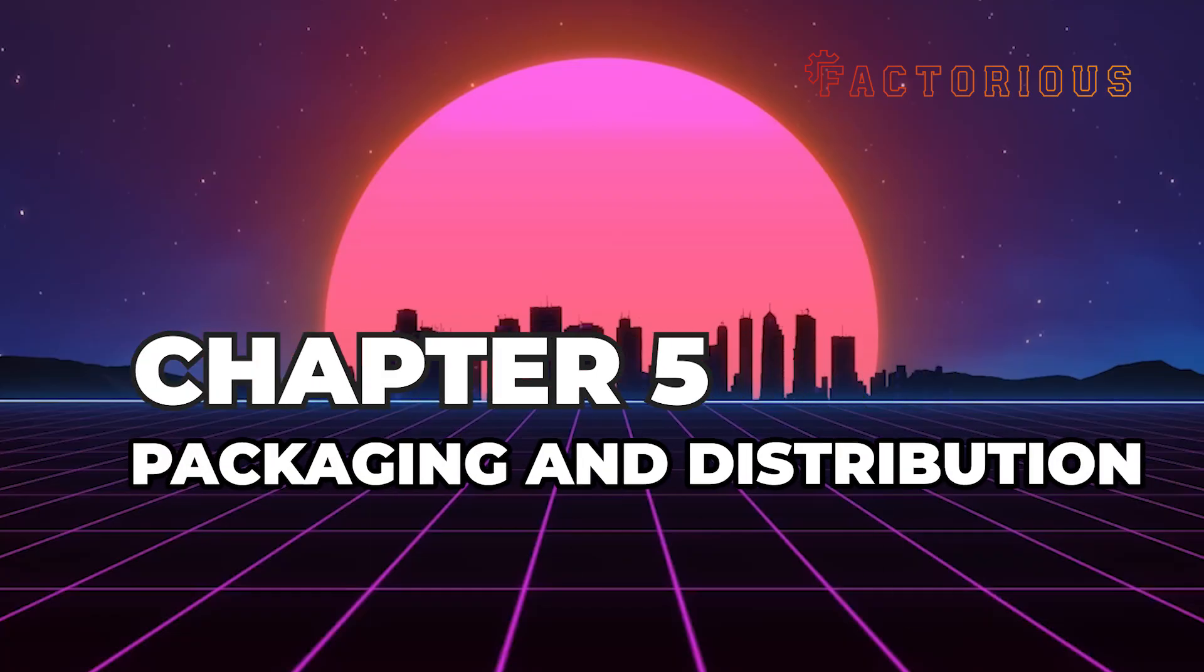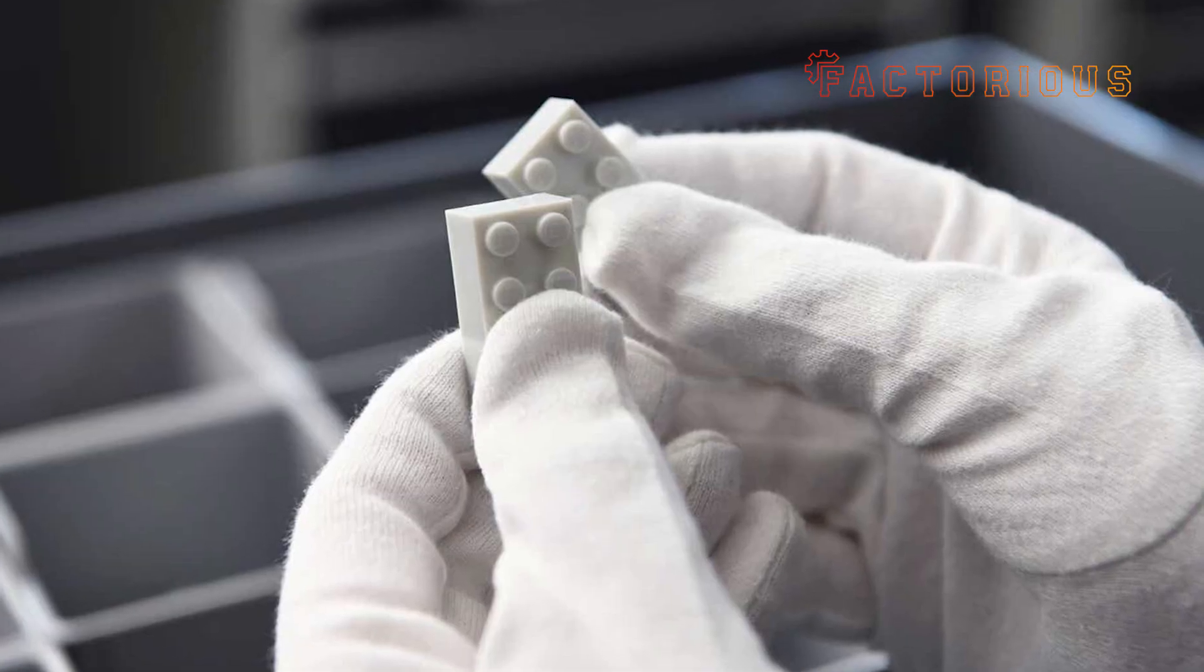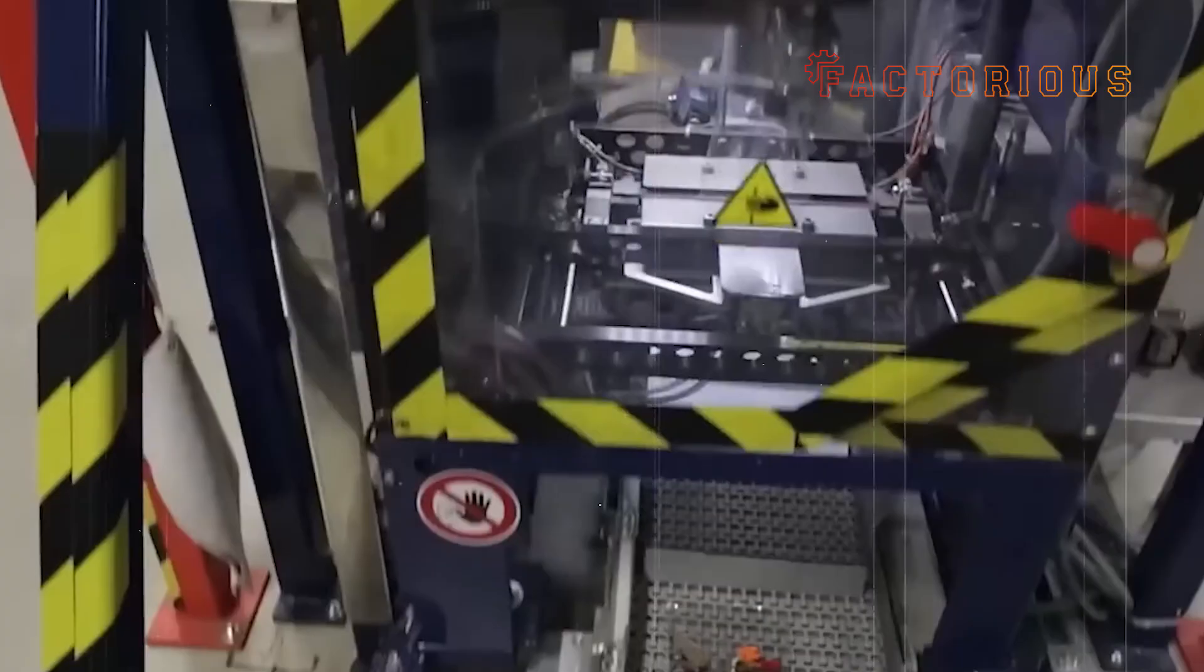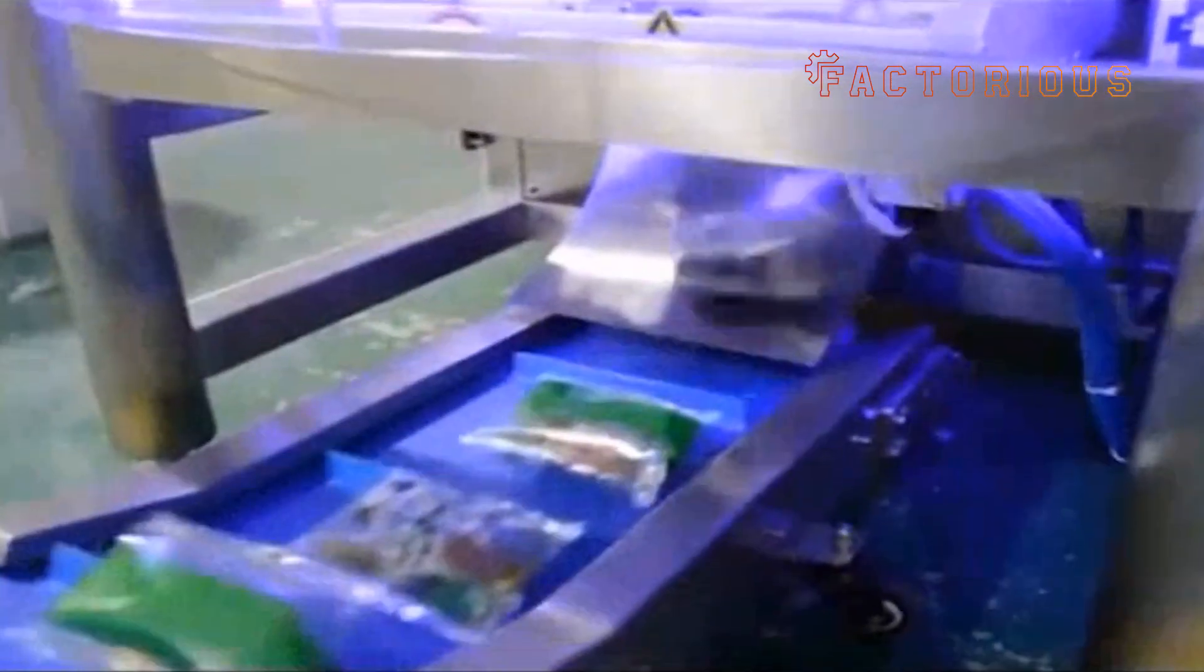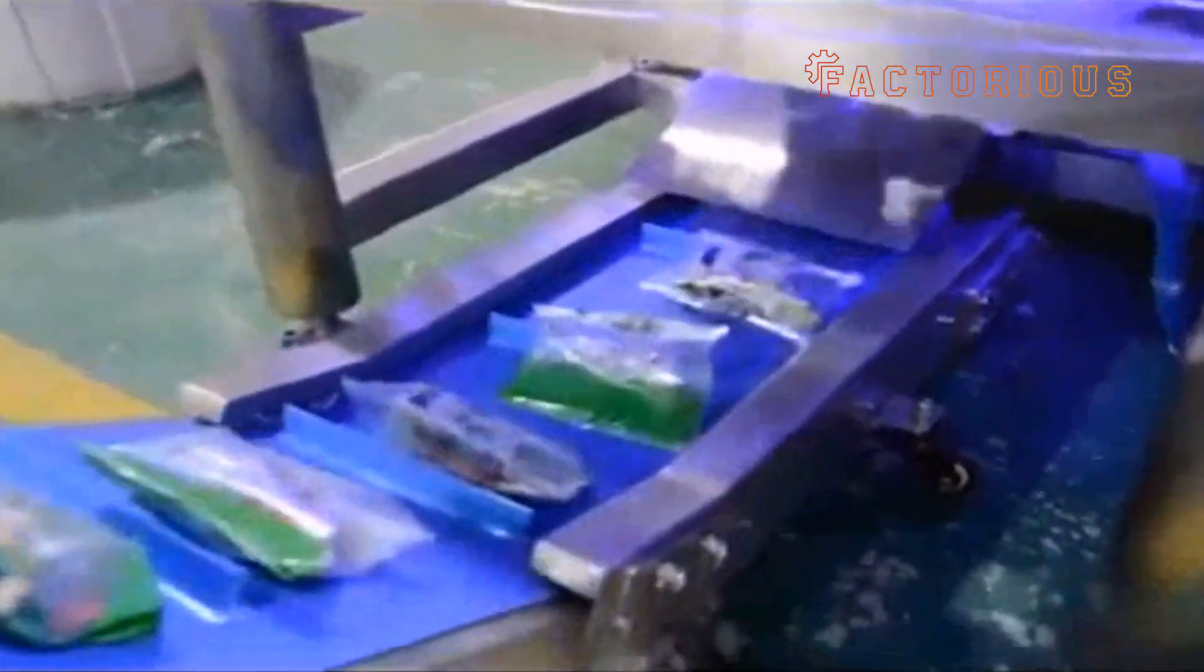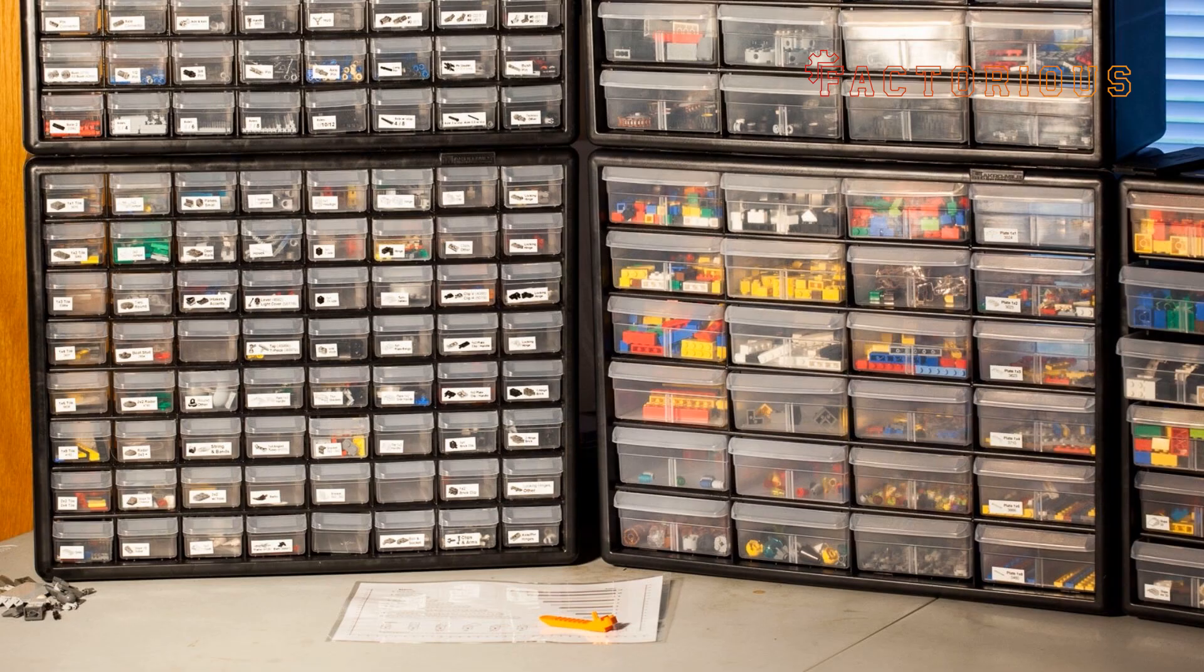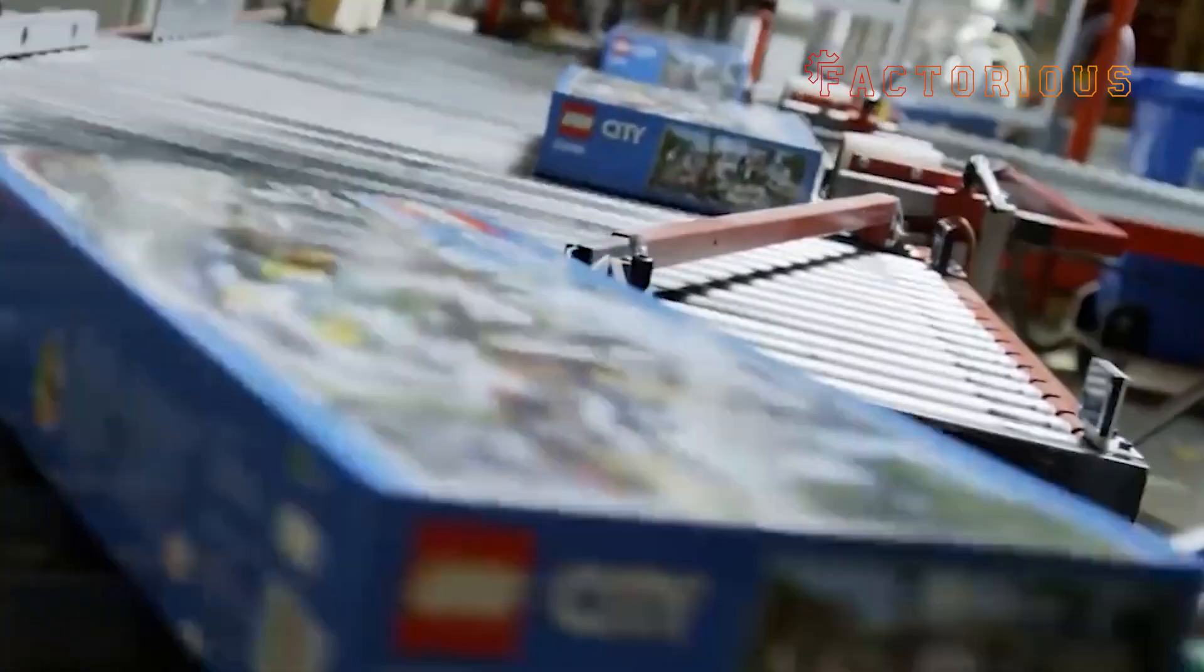Chapter 5. Packaging and distribution. After all the tests and checks, it's time for the final act. Turning those perfect bricks into sets that make their way into homes around the world. Lego packaging process is a symphony of precision. Automated robots weigh and bag specific quantities of parts. Every bag inside the box is calculated so builders can assemble in stages. Those numbered bags aren't random. They're psychological design. They make the experience smoother, more satisfying, and less overwhelming.